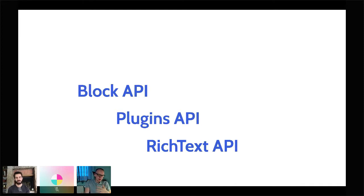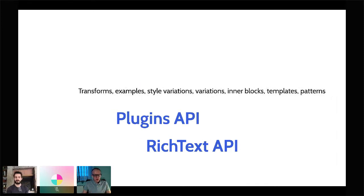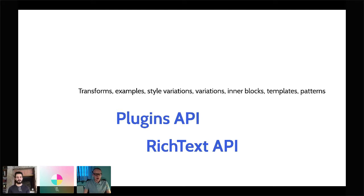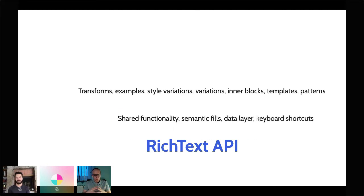The first group is the Block API. This is everything that allows you to create your own blocks, and it contains low-level APIs that build the whole experience — transforms, inner blocks, templates, and newer APIs like examples, type variations, and patterns. There is also the Plugins API, which allows us to build shared logic rendered in the whole editor. These are parts of the UI that you can put inside a given place — what we call semantic slots — which allows us to create smaller apps that work on functionality common to many blocks.